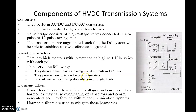A quick overview of the devices: converters perform AC-to-DC and DC-to-AC conversion. They consist of valve bridges and transformers. A valve is like a water valve — if you open it, current flows; if you close it, current cannot flow. Using a number of valves together forms a valve bridge. Converters consist of high-voltage valves connected in a 6-pulse or 12-pulse arrangement. The transformers are ungrounded so that the DC system can establish its own reference to ground.